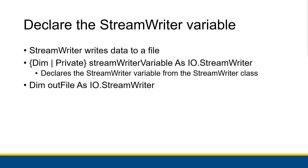The first thing we do is create a StreamWriter variable. This will hold a StreamWriter object, which will help us make the file we're trying to write to and actually write data to that file. The StreamWriter writes data to a file, and you would declare it as you would any other variable — using Dim or Private, depending on whether you're doing a procedure or class variable.